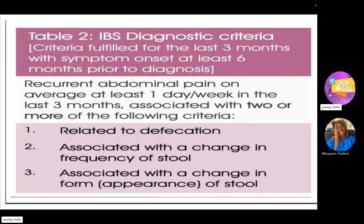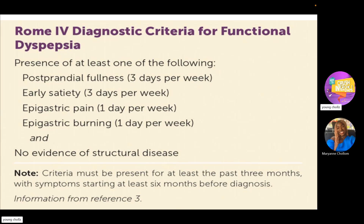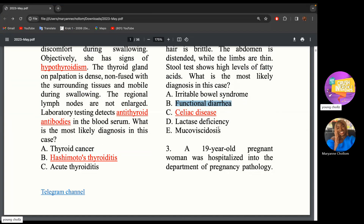Irritable bowel syndrome involves no structural changes in the bowels. You get recurrent abdominal pain on average at least one day per week in the last three months, associated with changes in bowel movements — defecation, frequency, or appearance of stool. Functional dyspepsia involves postprandial fullness, early satiety, epigastric pain, or epigastric burning — more of an epigastric issue. Functional diarrhea just means diarrhea without a cause.